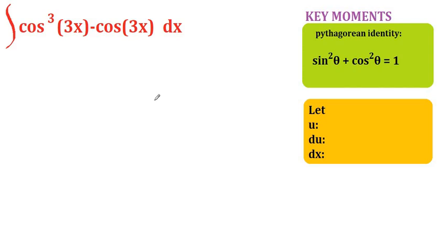Hello everybody. In this video we're going to integrate cosine cubed of 3x minus cosine of 3x. For this integration we're going to use the Pythagorean identity.